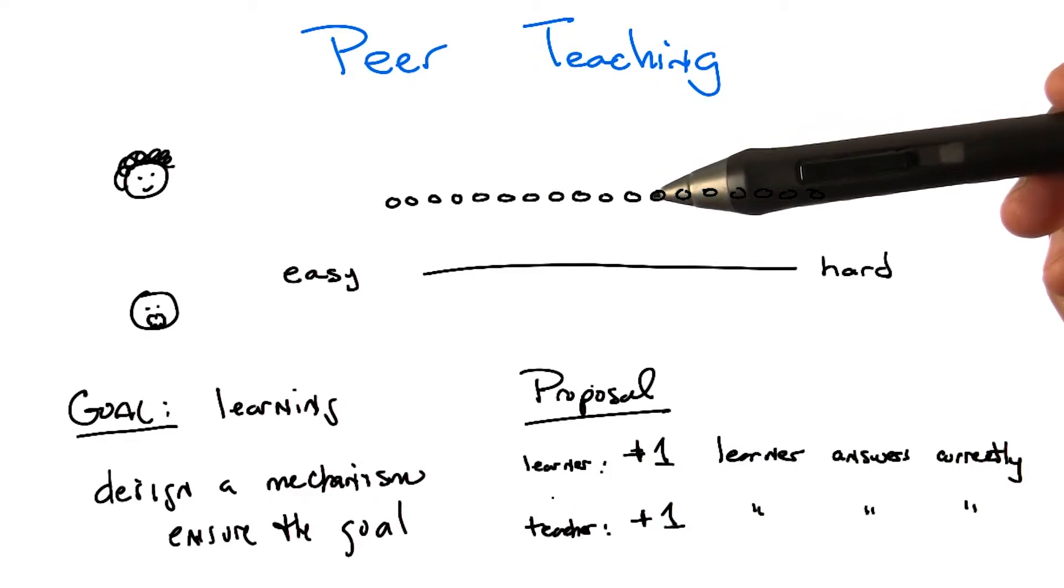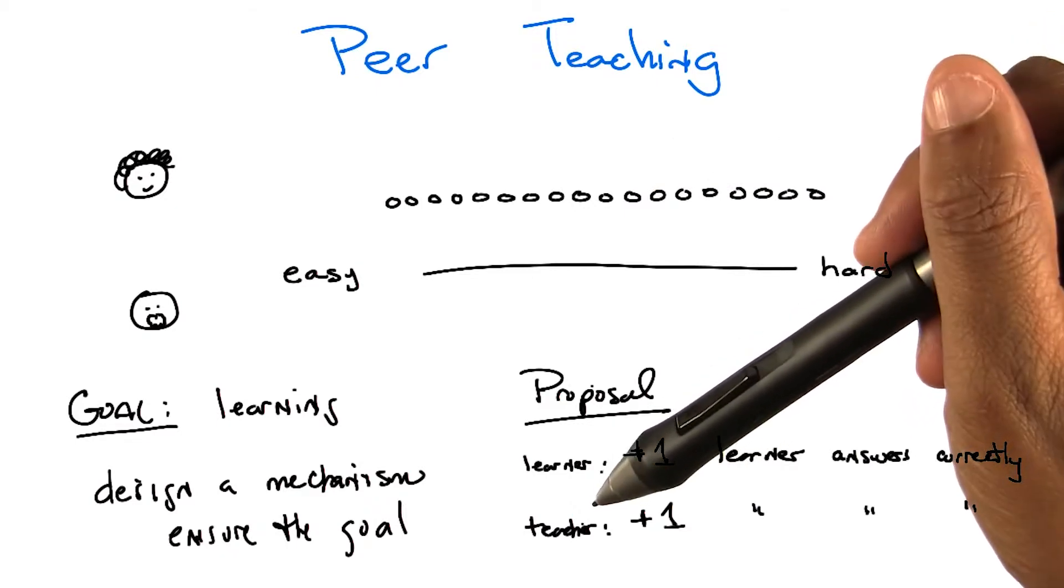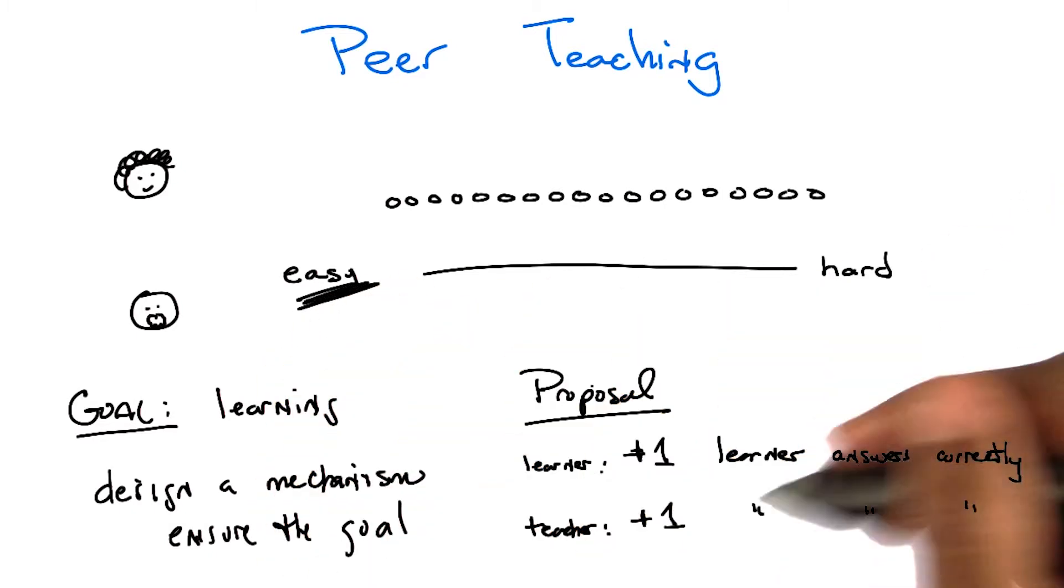Right, but that doesn't seem to really make sense for this problem in that we really want to be asking questions roughly at the level where the learner is. Well, that makes sense. Let me ask you one other. Before we get there, let me ask you one other possibility. Since this doesn't give us what we want, right, basically this says always stick to easy questions and we'll both do well.